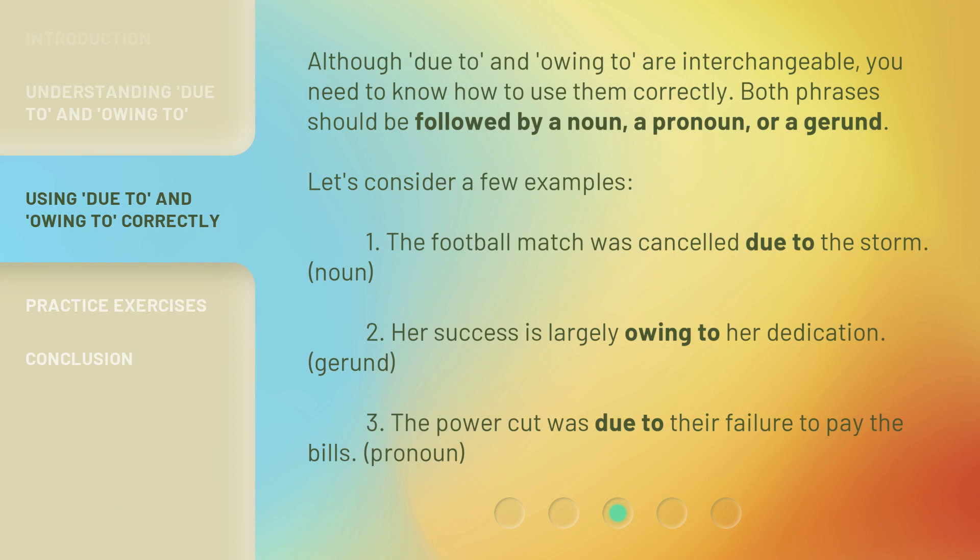Although Due To and Owing To are interchangeable, you need to know how to use them correctly. Both phrases should be followed by a noun, a pronoun, or a gerund. Let's consider a few examples: 1. The football match was canceled due to the storm. (Noun) 2. Her success is largely owing to her dedication. (Gerund) 3. The power cut was due to their failure to pay the bills. (Pronoun)